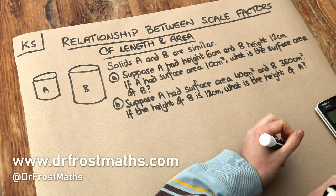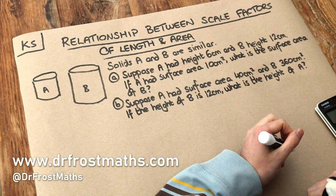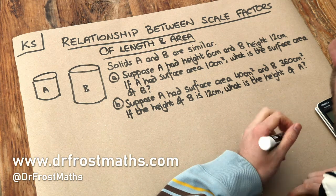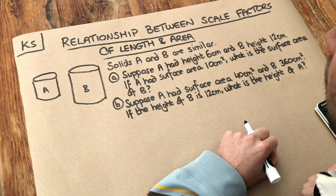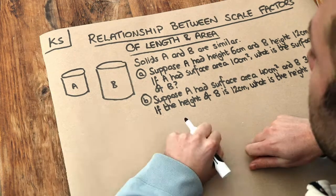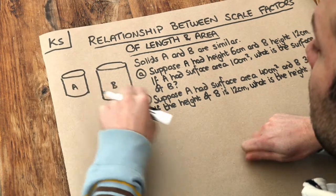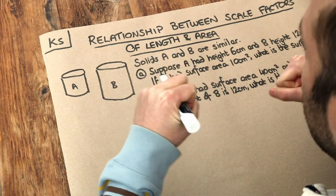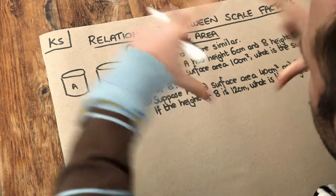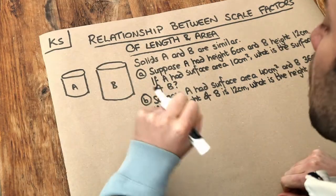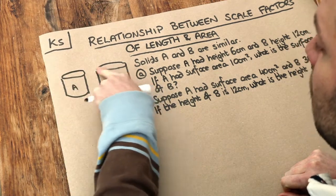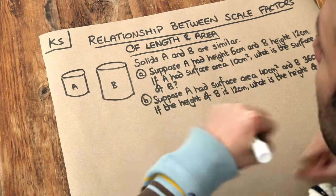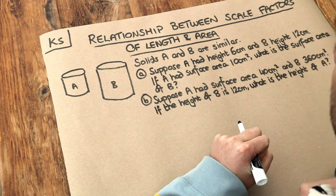Welcome to this Dr Ross Maths key skill video on the relationship between scale factors of length and area. We've got these two solids here — solids A and B are similar. Similar in maths means that these two 3D solids are the same underlying shape but just different sizes, so all the proportions are the same. For example, if the diameter of this circle was to double then the height would also double. Everything's in the same proportion if they're similar.